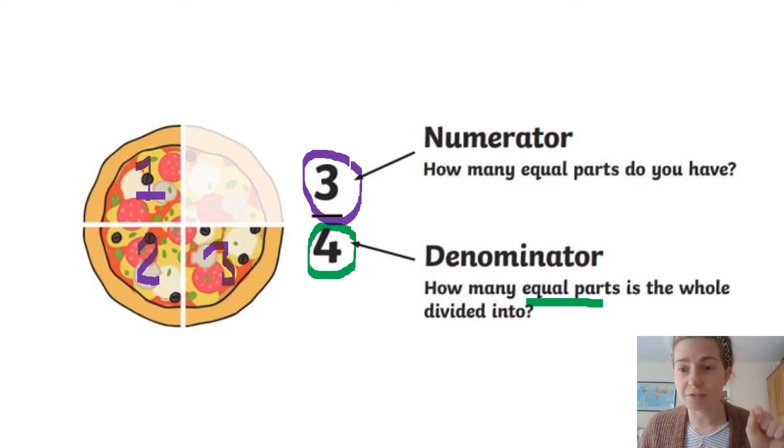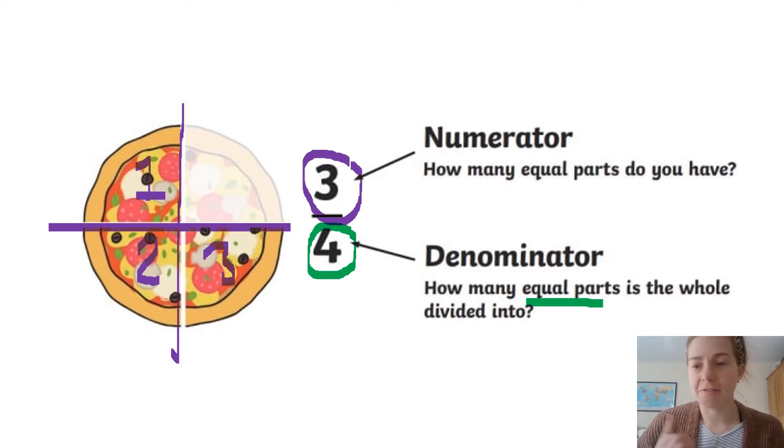We don't say 3 fourths. When you have 4 as the denominator, we read that as quarter, remember? So, it's a little bit trickier, because I know we have 5th, 6th, 7th, 8th, 9th, 10th, but we have half, thirds, quarters. So, well done everyone who read that as 3 quarters.